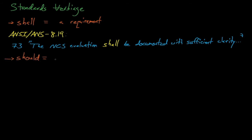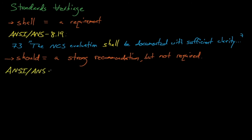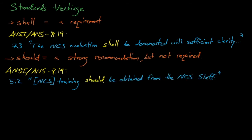The verb 'should' denotes a strong recommendation that is not a firm requirement. Generally, licensees must either comply with 'should' statements or justify why they do not. In ANSI-ANS 8.19, article 5.2 states that nuclear criticality safety training should be obtained from the nuclear criticality safety staff. It makes sense for this to be a 'should' statement. Obviously, nuclear criticality safety staff will usually be the best people to conduct criticality safety training, but there are circumstances when this might not be true. For example, if this were a 'shall' statement, a criticality safety veteran who got promoted to management would be ineligible to help with their site's training program, and external consultants would be ineligible to conduct criticality safety trainings.